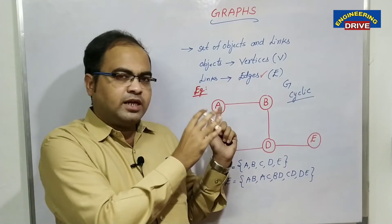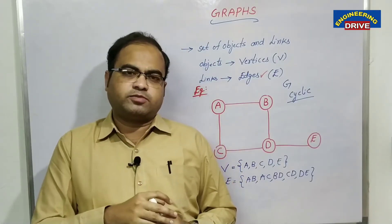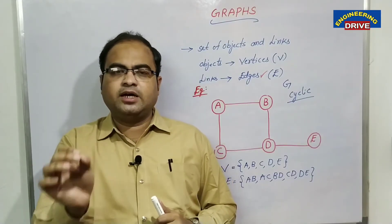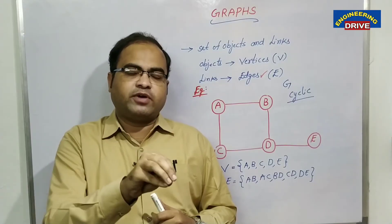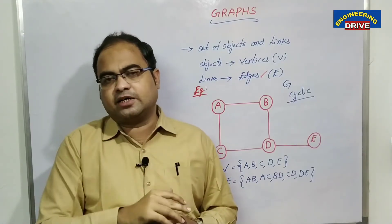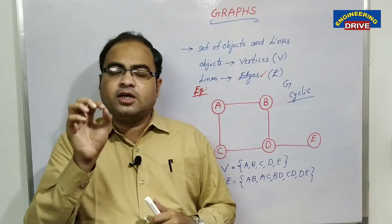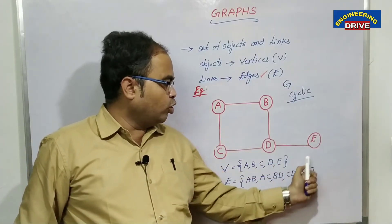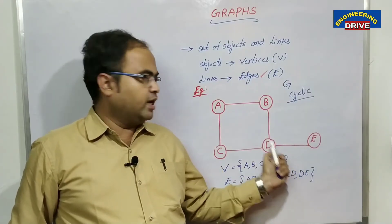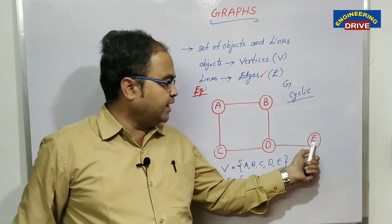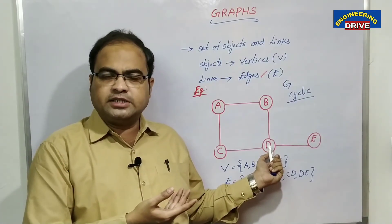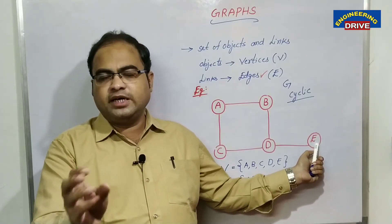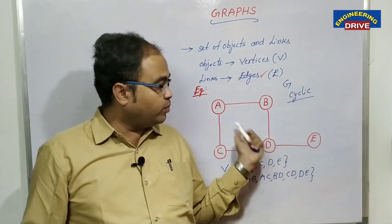In an exam, if they ask which of the following is a graph and four diagrams are given, you can identify the graph because it is closely connected with edges and you cannot determine the end. For example, you cannot say E is the end because there is no direction — from D to E and from E back to D are both possible. If there is a direction from D to E, then E is the end vertex, but without direction, it is a graph.